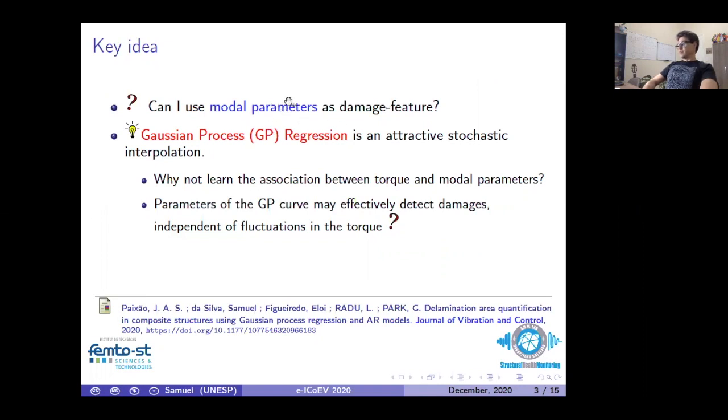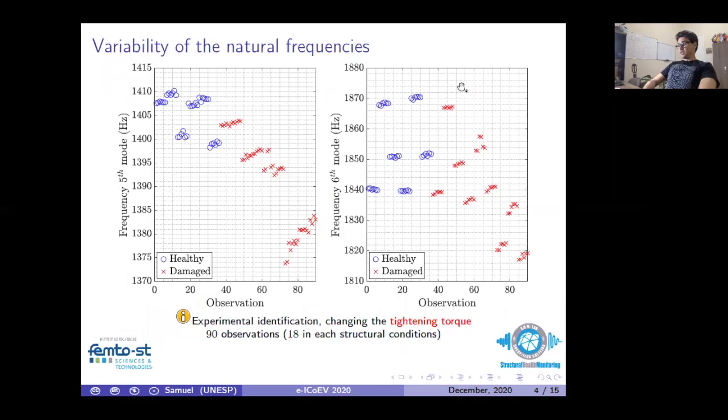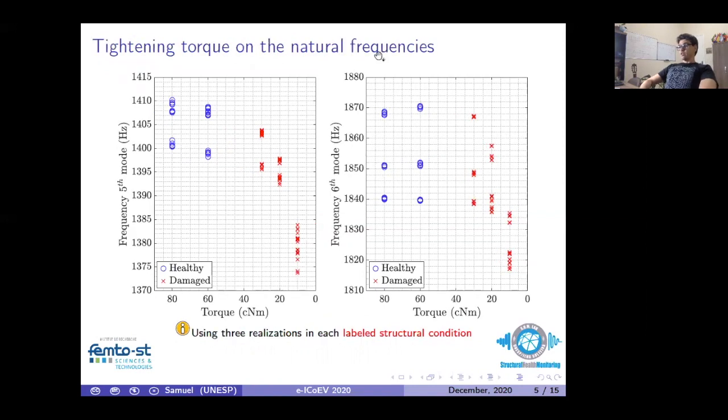Our work's premise is to reply to the issue: Can I use the modal parameters as a damage-sensitive feature to detect lost tightening torque? The concept is to apply Gaussian Process Regression as a stochastic interpolation. Here we can see the two most sensitive natural frequencies, named the frequency of the 15th and 16th mode. We can observe that these natural frequencies change against the observation, assuming different torque values. And the difference here corresponds to severe effects, not precisely associated with the torque fluctuation.